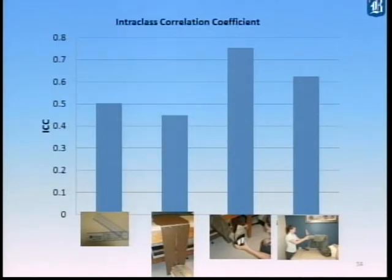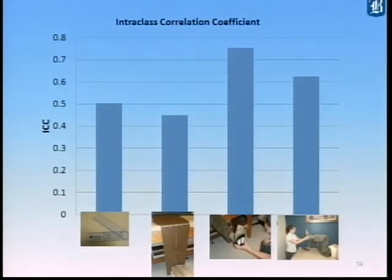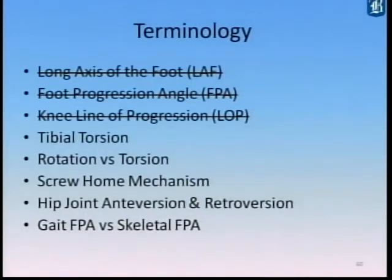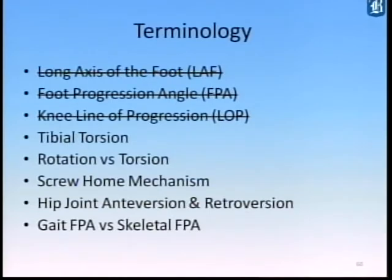I think all techniques can be accurate when you understand the biomechanics of what you're trying to accomplish — prone, sitting, and supine can all be equally accurate as long as you're executing the protocol with a sound understanding of the underlying biomechanics. To progress further, we're going to look at tibial torsion, rotation and torsion, the screw-home mechanism, hip joint antiversion and retroversion, and gait foot progression angle versus skeletal foot progression angle.